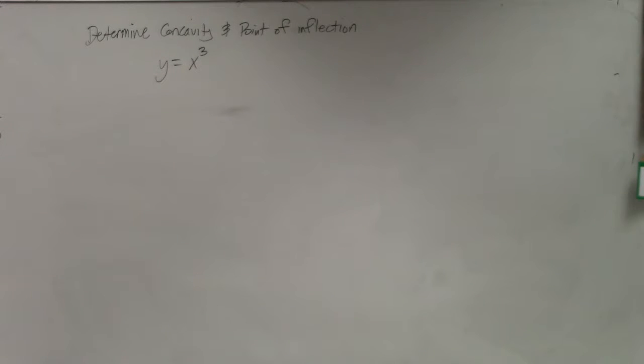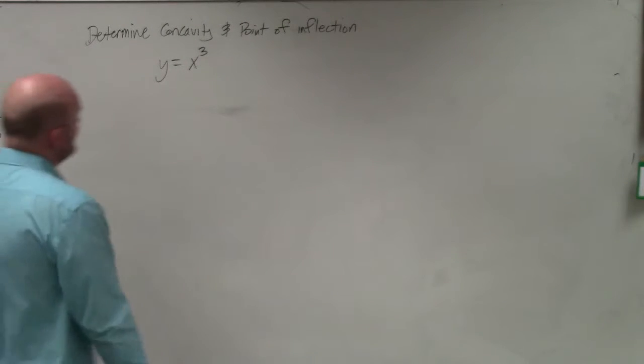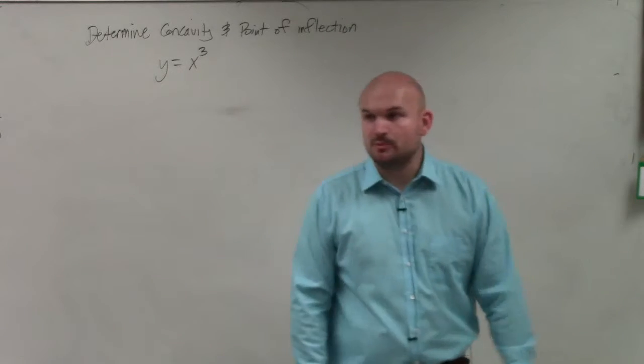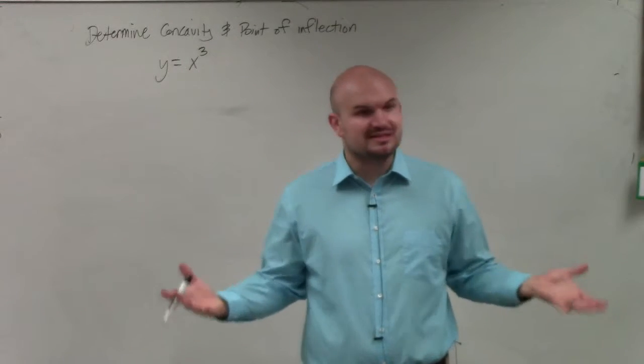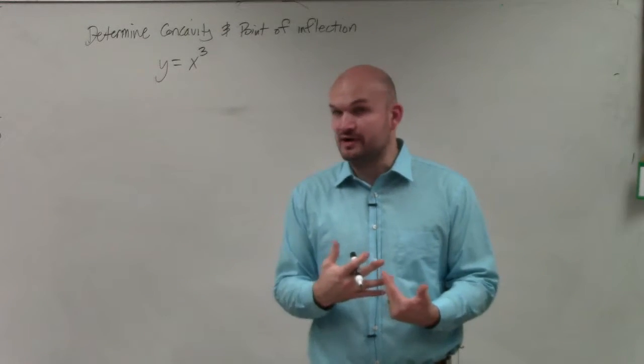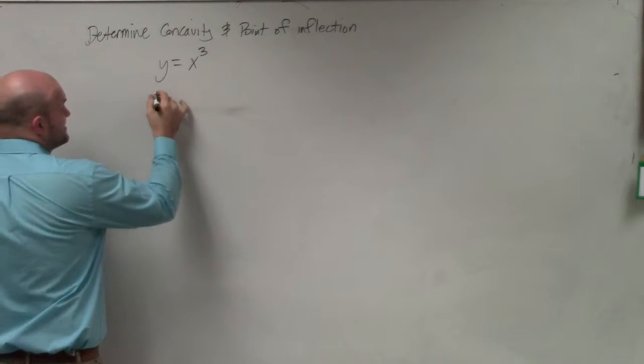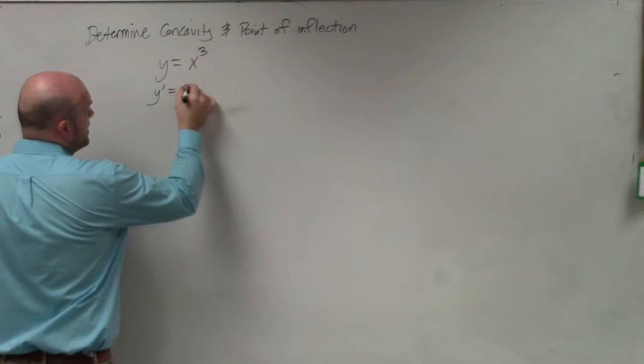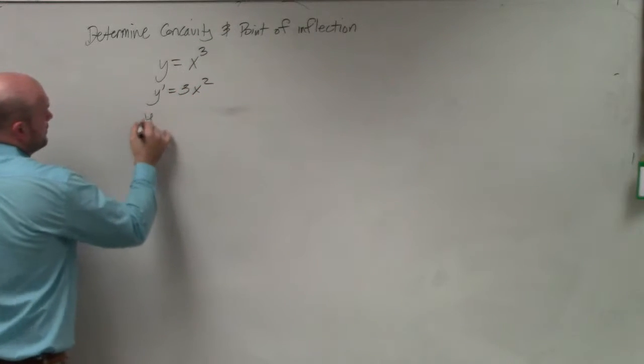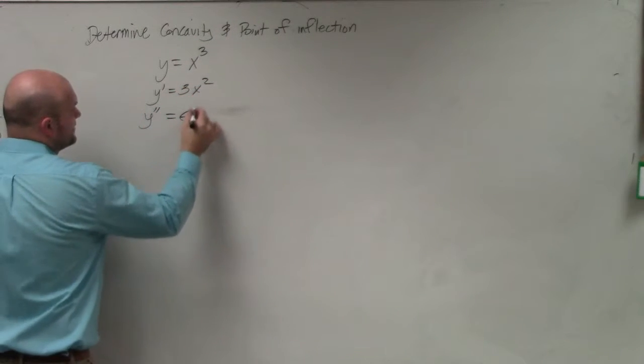OK. So in this example, what we want to do is determine our concavity and identify our possible point of inflection. Since we're talking about the concavity, that's going to be on the second derivative, right? So the first thing I'm going to do is go ahead and get started with identifying the second derivative. So y prime is going to be 3x squared. y double prime is going to be equal to 6x.